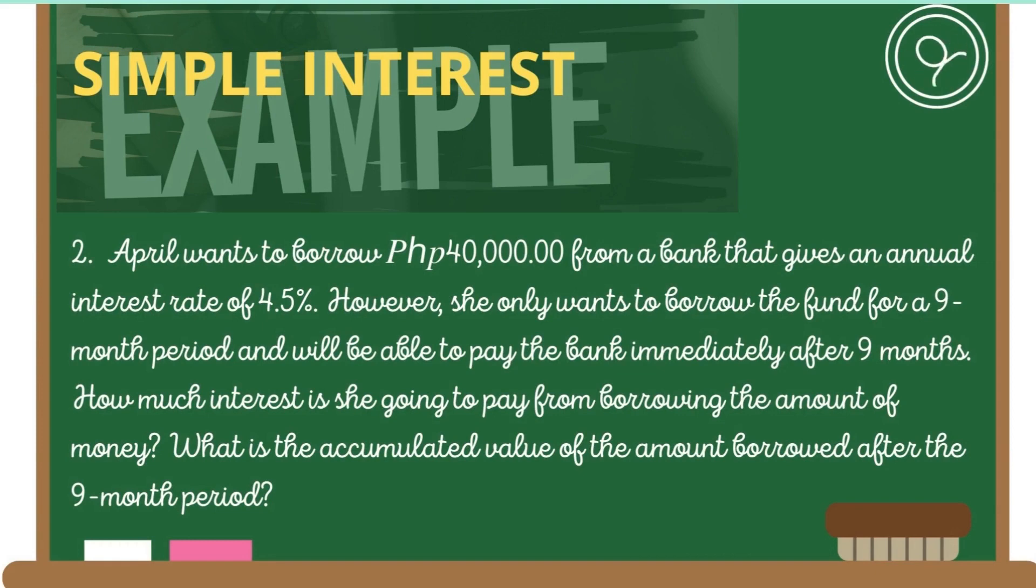Now let's go to another example. April wants to borrow 40,000 from a bank that gives an annual interest rate of 4.5 percent. However, she only wants to borrow the fund for a nine-month period and will be able to pay the bank immediately after nine months. How much interest is she going to pay from borrowing the amount of money? What is the accumulated value of the amount borrowed after the nine-month period?